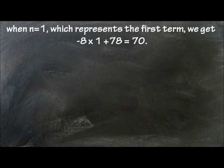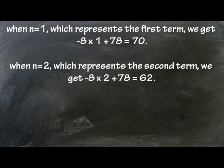Let's check. When n equals 1, which represents the first term, we get negative 8 times 1 plus 78 equals 70. When n equals 2, which represents the second term, we get negative 8 times 2 plus 78 equals 62.